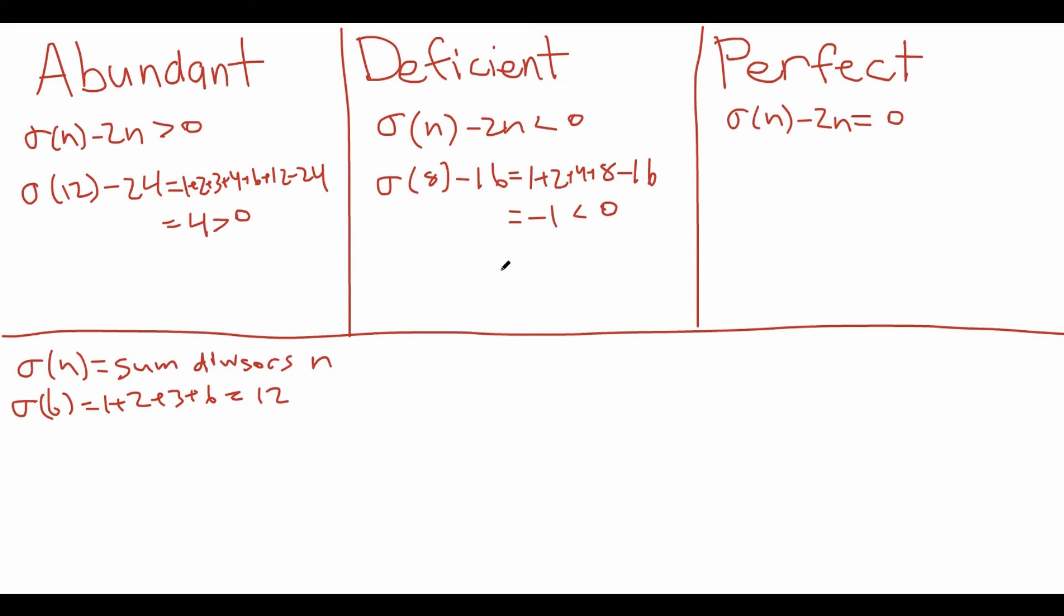In other words, the sum of the divisors of n is exactly equal to twice the number itself and an example of this we've already seen is 6 because sigma of 6 minus 12 is equal to 1 plus 2 plus 3 plus 6 minus 12 which is equal to 0.